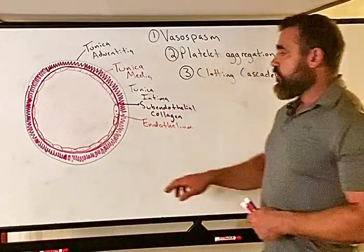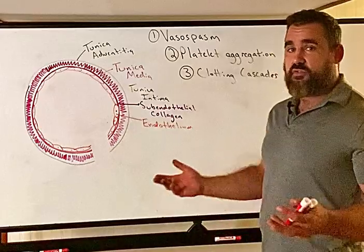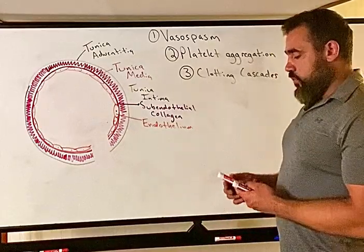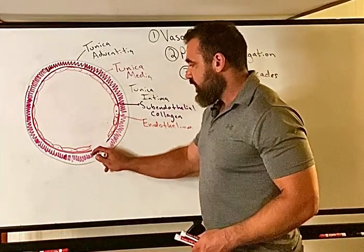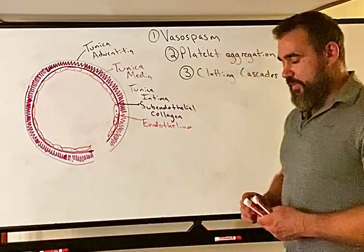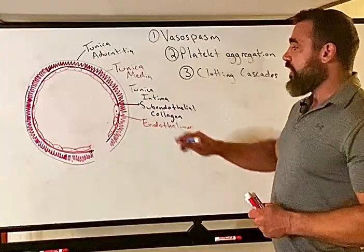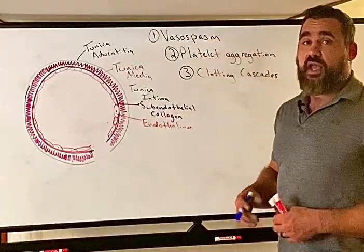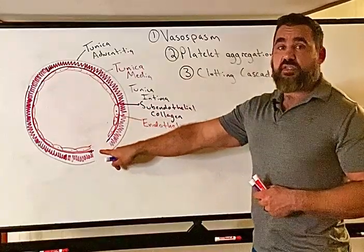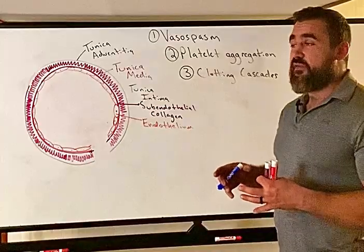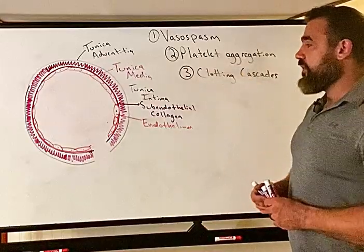When there is damage to the blood vessel wall — from a cut, surgery, or trauma — the subendothelial collagen is exposed to blood. The smooth muscle will contract and constrict the vessel to minimize blood loss by reducing flow to that area. That is vasospasm. Then, platelets need to be activated right away.